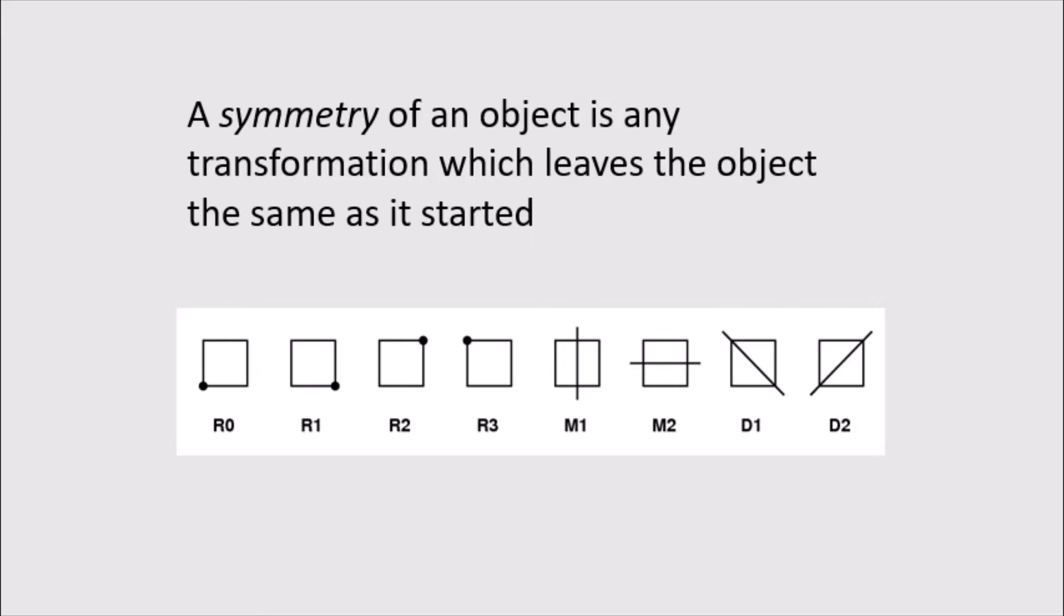So here we have a diagram of all the symmetries of a square. On the very right, there is the doing-nothing symmetry, which just does nothing. Then we have the symmetry which rotates the square 90 degrees counterclockwise. We can also rotate it 180 degrees or 270 degrees counterclockwise. And then we have the four reflections, which also leave the square the same as it started.